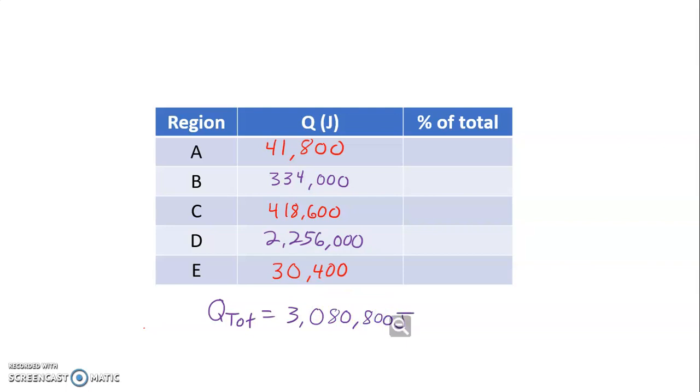Now we can calculate the percentage for each of these. I'm going to take each individual amount of energy for each region and divide it by 3,080,800 joules and then multiply by 100. So I'm going to go ahead and fill those in.